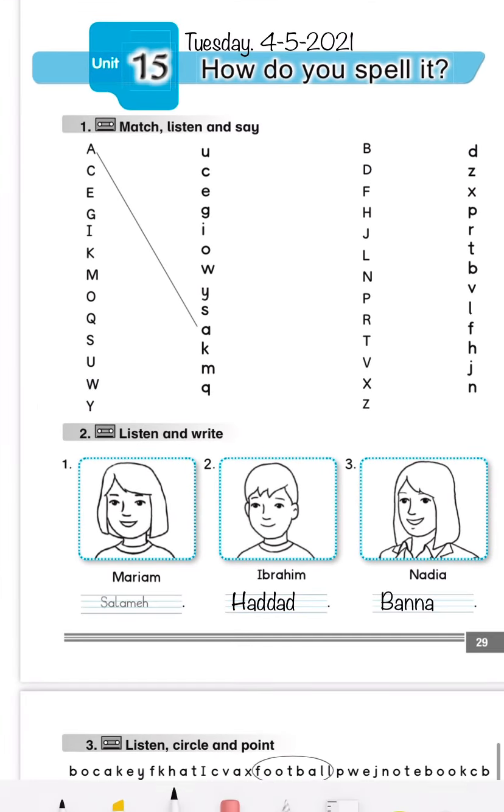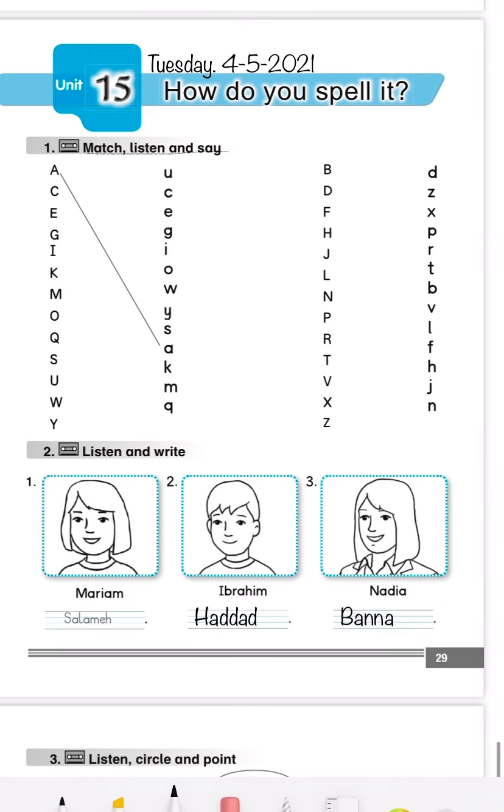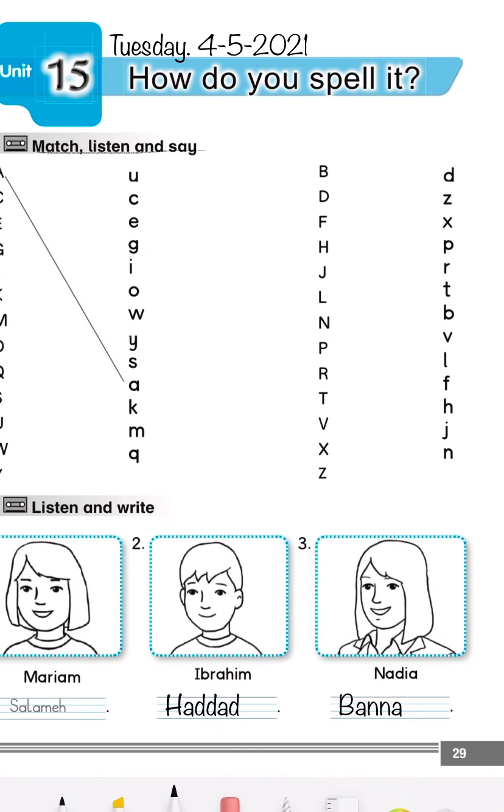Exercise number one: match, listen, and say. Here we have the alphabet. You have to match the capital letter with the small letter. It's homework for you.